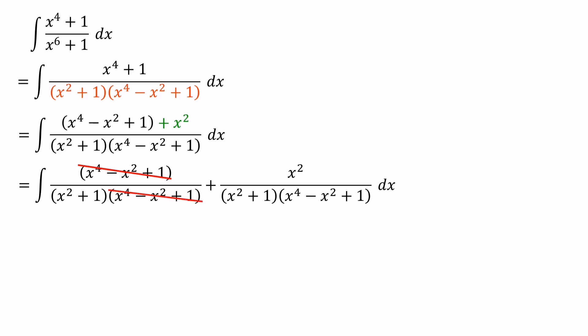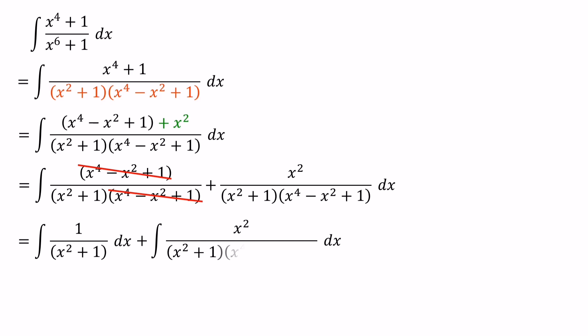Then we can consider each integral sign separately. The first one is the integral of 1 over x squared plus 1, and the second one is the integral of x squared over x squared plus 1 times x to the power of 4 minus x squared plus 1. The integral of 1 over x squared plus 1 equals arctan of x.